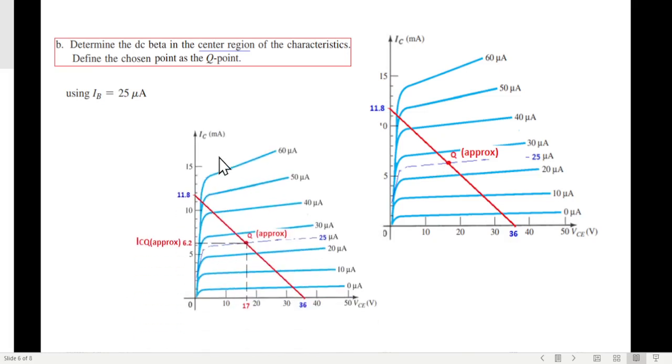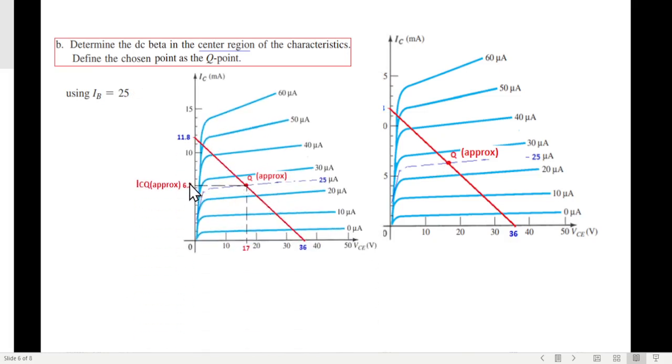So with this Q approximate using IB 25 microampere, we can now get the ICQ approximate and similarly VCEQ approximate. We're primarily concerned with this. This one we extend, it is touching 6.2 milliampere line. So now beta is defined by this formula. We know beta is IC over IB. In this case we'll call it ICQ approximate and IBQ approximate as well. Both the values are known now: 6.2 milliampere from here, and the current we have assumed is IB 25 microampere. So beta is 248. So this is part B.